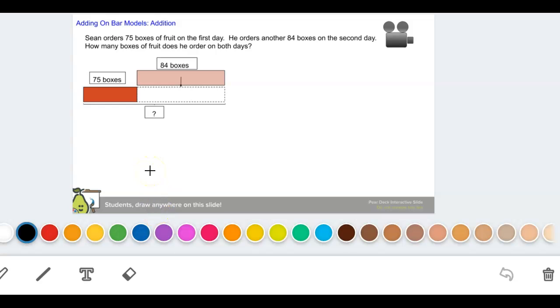Our next slide is adding on bar model. The problem reads: Sean orders 75 boxes of fruit on the first day. He orders another 84 boxes on the second day.